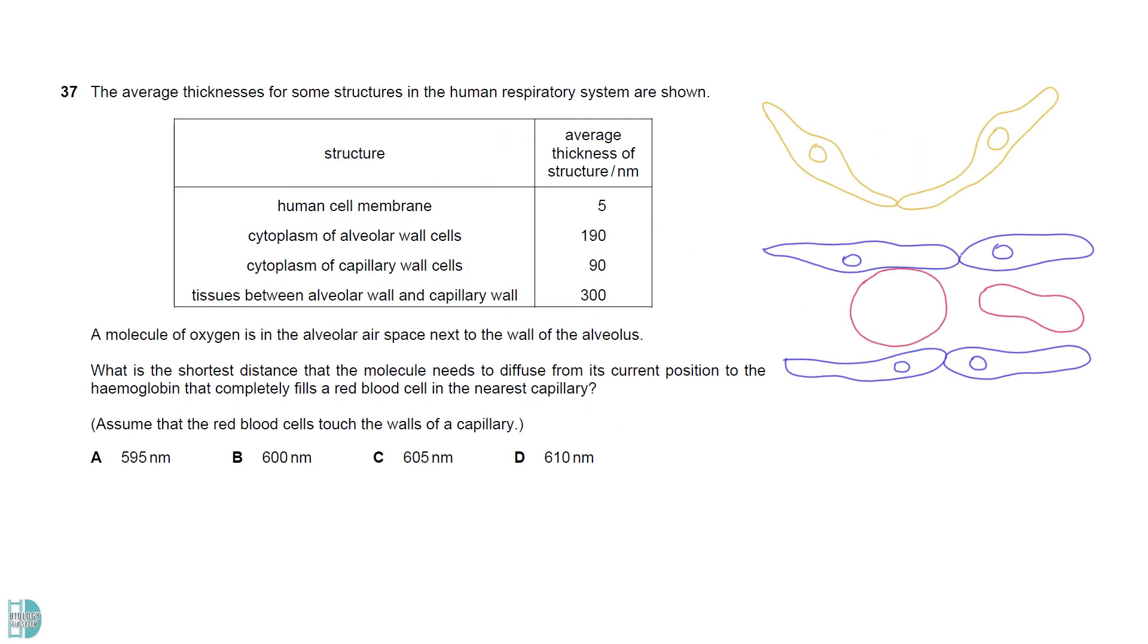Let me use a diagram to show you all the membranes and cytoplasm oxygen molecules have to diffuse through. If you add up all the structures, you will get 605 nanometers.